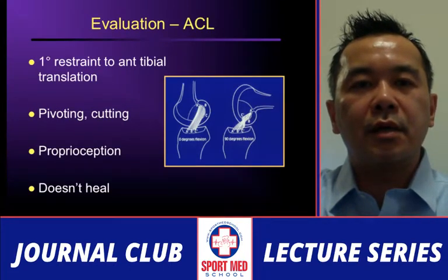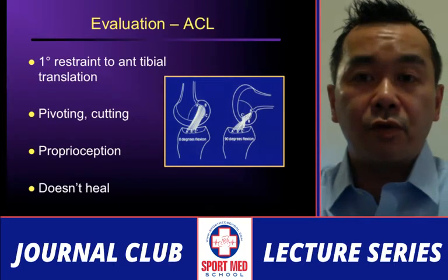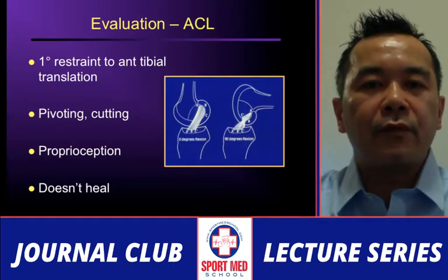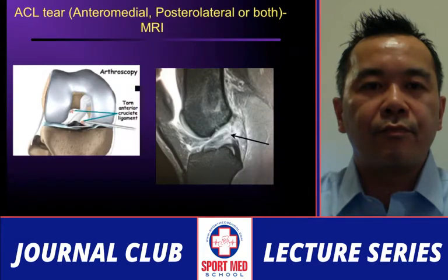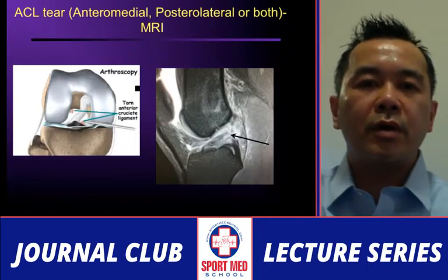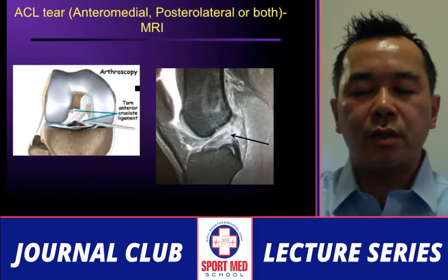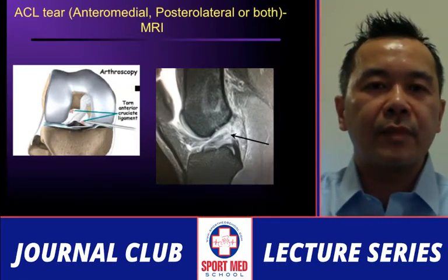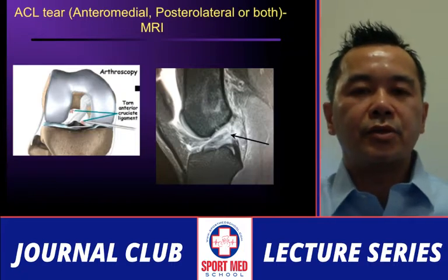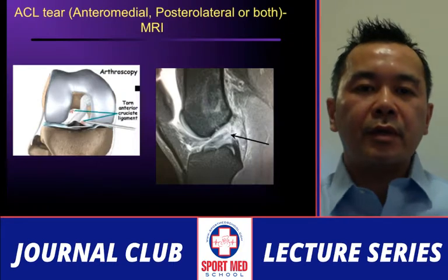The ACL is the primary restraint to anterior tibial translation and is responsible for pivoting and cutting maneuvers. It also provides proprioception, helping determine where the knee is in space. Unfortunately, when the ACL tears it does not heal, unlike the collateral ligaments. On MRI you look at which bundle is torn — anteromedial or posterolateral or both — which correlates with the amount of instability. The posterolateral bundle is more symptomatic in terms of the patient's inability to cut and pivot during sports.